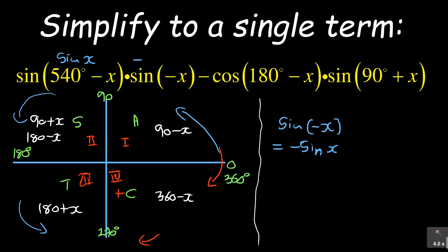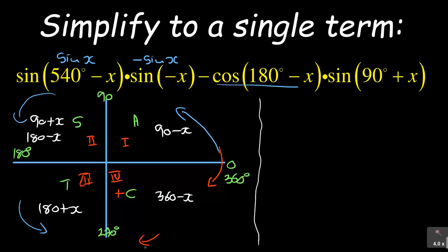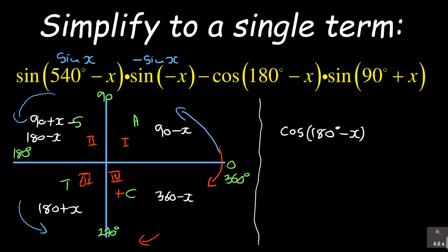So that gives us negative sine(x). We move on to cos(180 - x). We ask ourselves which quadrant cos(180 - x) is in. Again, it is in the second quadrant. In the second quadrant, only sine is positive, meaning cosine is negative in that quadrant. Because cosine is negative, this simplifies to negative cos(x).